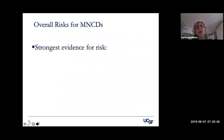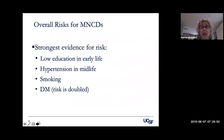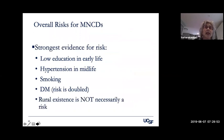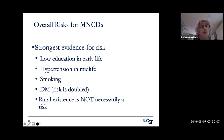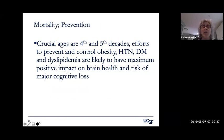The overall risks for major disorders — strongest evidence includes low education in early life (this is worldwide), hypertension in midlife, smoking, and diabetes, in which the risk is doubled. Rural existence was previously thought to be a risk factor due to possible impact on education, but newer studies indicate this is not necessarily a specific risk — so this is an equal opportunity disorder between rural and urban populations. In terms of prevention, crucial ages are the fourth and fifth decades, which should emphasize efforts to prevent and control obesity, hypertension, diabetes, and dyslipidemia — these interventions are likely to have the maximum impact on maintaining brain health.